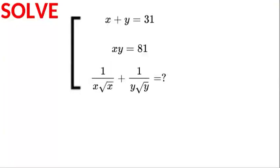Hello and a very warm welcome back to Maths Plus. Today we have a combination in algebra where x plus y is equal to 31, xy is equal to 81, and we're looking for the expression 1 over x√x plus 1 over y√y. Maybe pause the video and give it a go and let me know how you get on. If you're new to the channel, don't forget to subscribe and give a thumbs up.